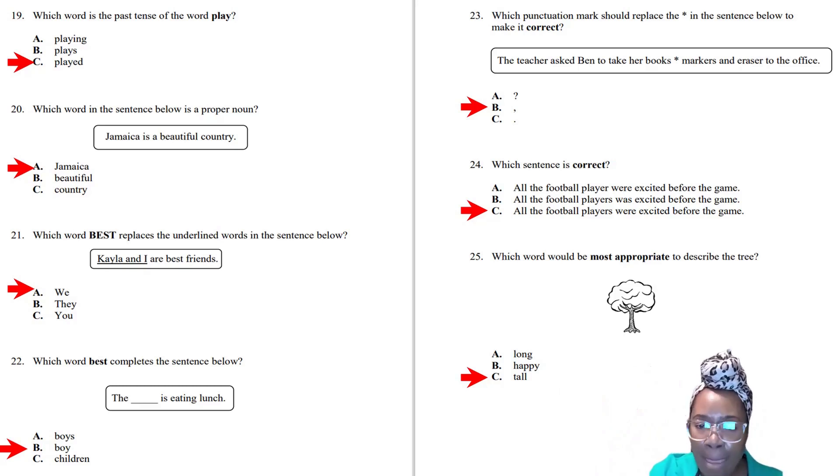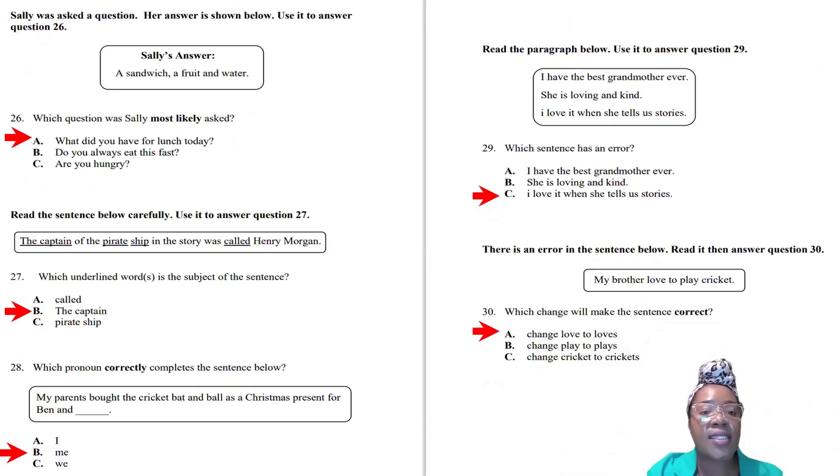Question twenty-five: Which word would be most appropriate to describe the tree? A tree grows taller and taller, you're talking about height, so the word is tall. You wouldn't say a happy tree in this context because a tree isn't like a person with facial expressions, and long is about length. Question twenty-six: Sally's answer is 'a sandwich, a fruit, and water.' Which question was Sally most likely asked? 'What did you have for lunch today, Sally?'